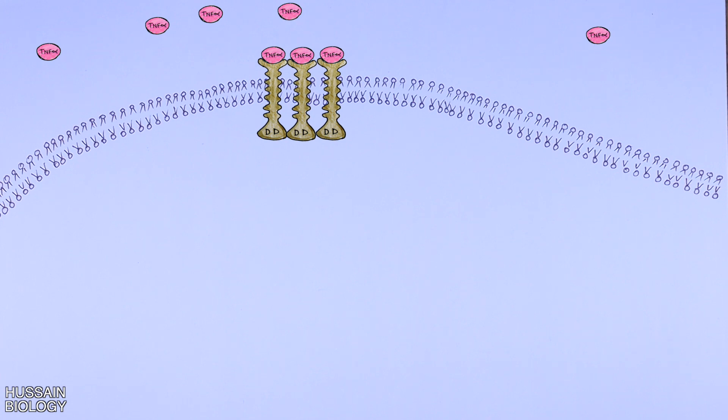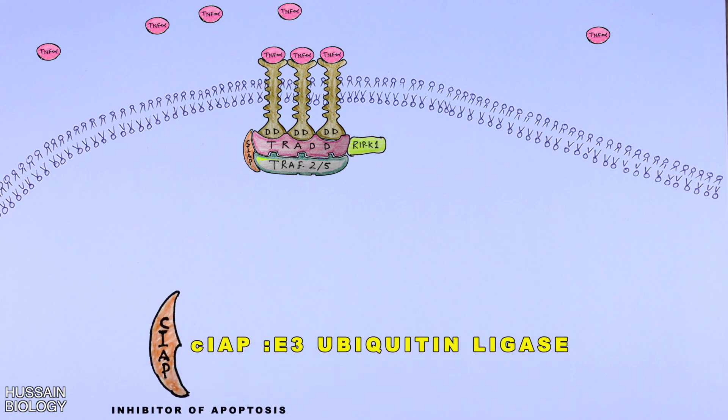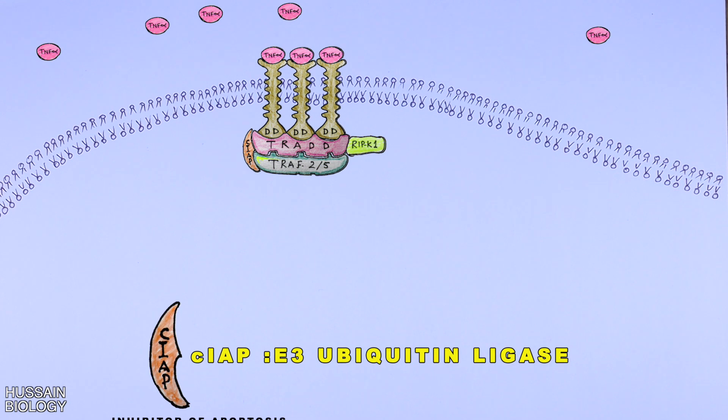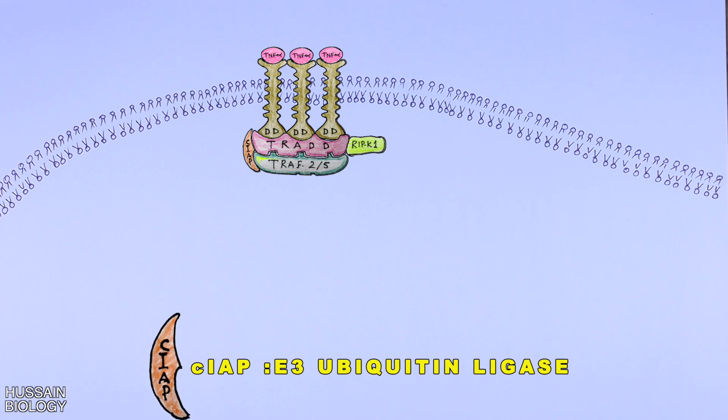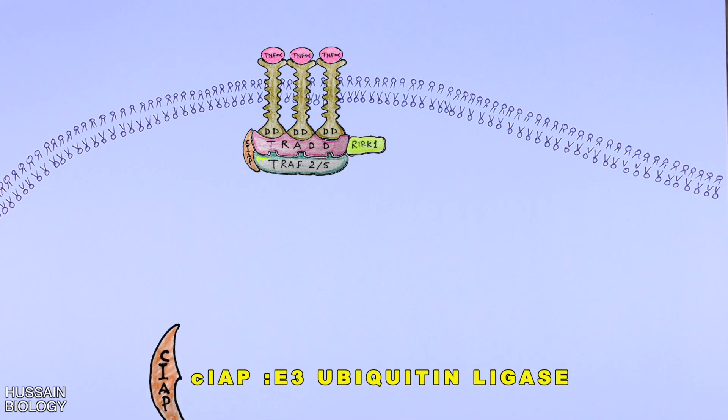First, the death domain of TNFR1 recruits TREAD protein and RIPK1 protein. Then this TREAD protein recruits TREP2 protein, which is one of the important proteins here because it allows engagement of ubiquitin ligase CIAP - cellular inhibitor of apoptosis protein. Here we see the binding of CIAP towards the receptor complex.